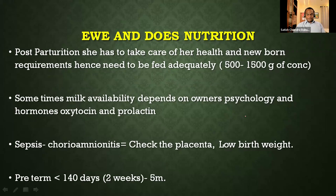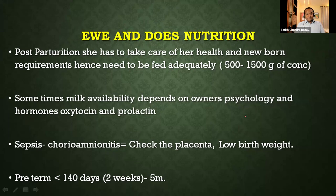Farmers generally do not give concentrates at all, but we recommend 500 grams to 1.5 kg per ewe because you are expecting 300 grams of growth rate in the lamb. This must come from feed the ewe eats, which is converted to milk, which then goes to the lamb. The owner's psychology also matters — a good caregiver who is calm and attentive results in healthier lambs with good wool and hair, while a nervous owner can compromise milk production.